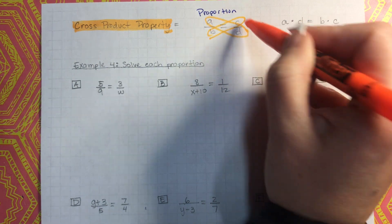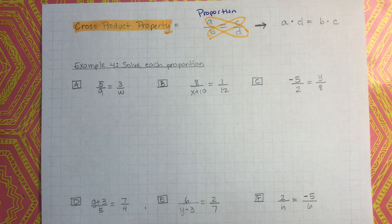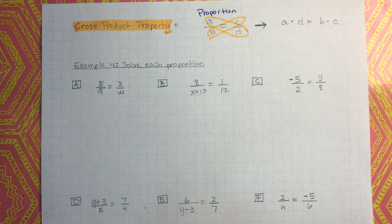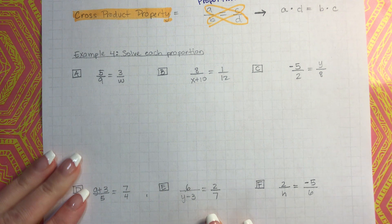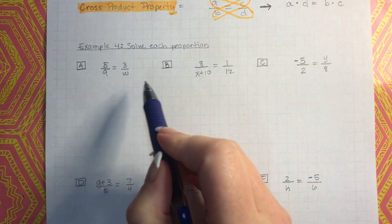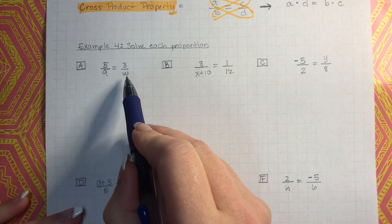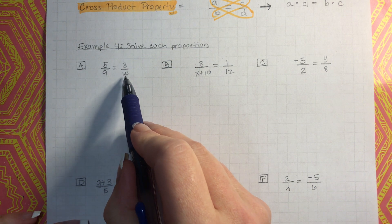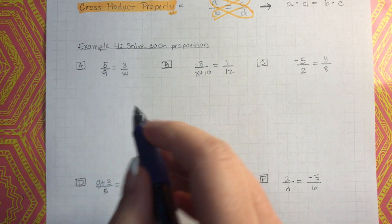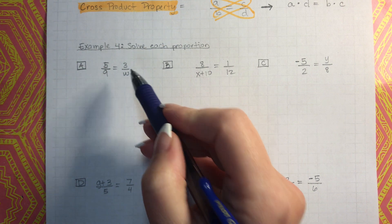So you can just multiply these two things together. In the next example, what we're going to be doing is applying the cross-products property. Let's start here with A — we're going to solve each proportion. We're trying to figure out what the variable is, and we can never figure it out when it's on the bottom, so we have to use the cross-products property. We talked about doing it a different way earlier.